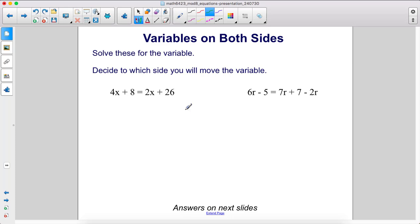Solve these for the variable. Decide to which side you'll move the variable. We have 4x on this side, 2x on this side. I'll move 2x to the other side because then our answer will be positive. Let's subtract 2x from both sides.